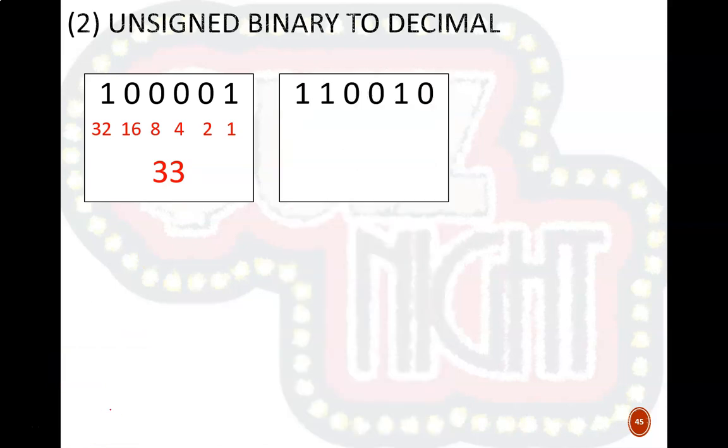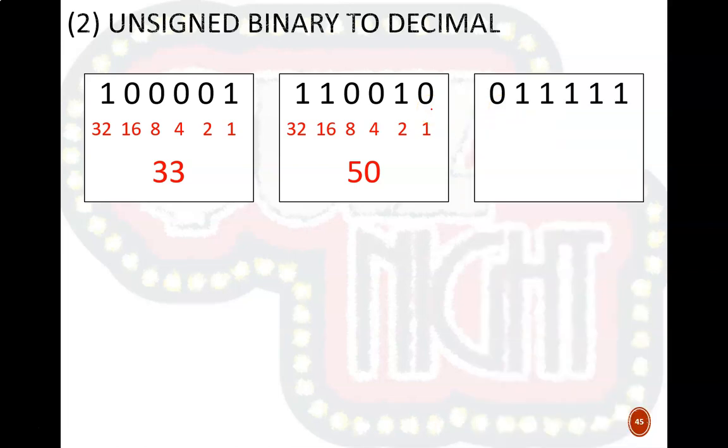Next one. The answer here is 50. That would be 32 plus 16 plus 2 gives you 50. And all the other weights have a 0 associated with them. Next one. The answer here is 31. And this follows the pattern that we saw before where we have all 1s at the end of the number. So we do 2 raised to the number of 1s, which is 32. Not a coincidence. That's the same number as the bit weight to the left of all those ones. And then we subtract 1 from that value to give you 31.